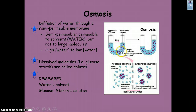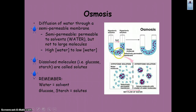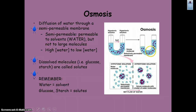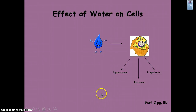Generally, the solute would move from an area of greater to lesser concentration, but because the membrane is semipermeable, the solute can't move through it. So instead, water moves from an area of greater concentration to lesser concentration. If you imagine this as Kool-Aid — strong Kool-Aid on one side and weak on the other — eventually both sides will be the same strength because water moved from greater to lesser concentration until equilibrium was reached.